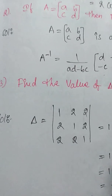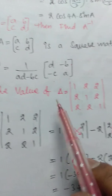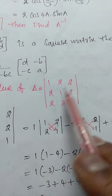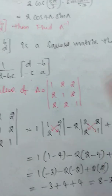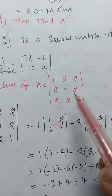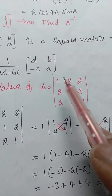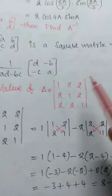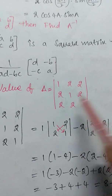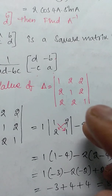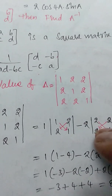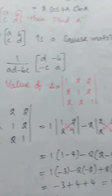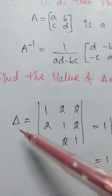Next question: find the value of delta, which is the determinant of the matrix [[1, 2, 2], [2, 1, 2], [2, 2, 1]]. This is a 3 by 3 determinant. We have to find out the value of this 3 by 3 determinant.